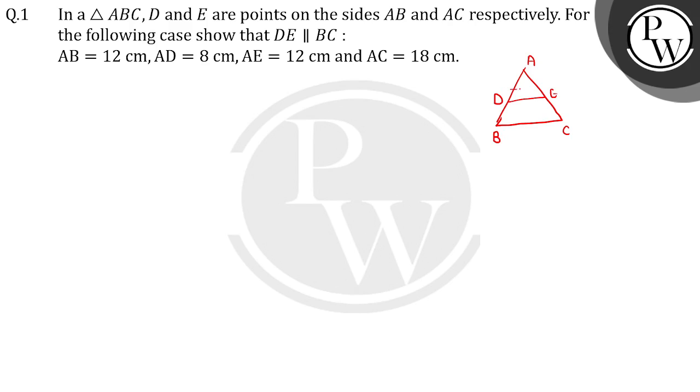If AD by DB equals AE by EC ratio, we can say by Converse of BPT that DE is parallel to BC. Let's see here what is given.